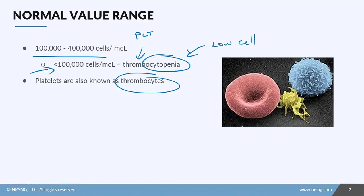What do platelets look like? In this picture, you can see the thrombocyte — the platelet — and then this is a red blood cell, and this is a white blood cell. You can see that the platelets are a lot smaller than red blood cells and white blood cells.